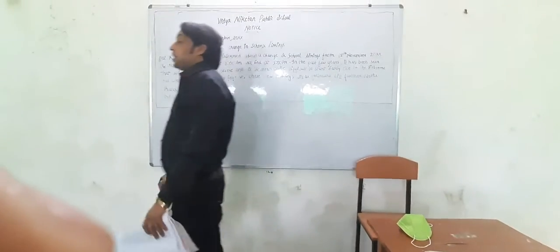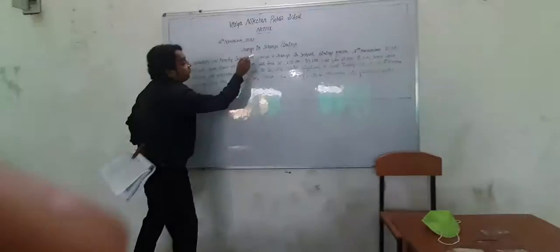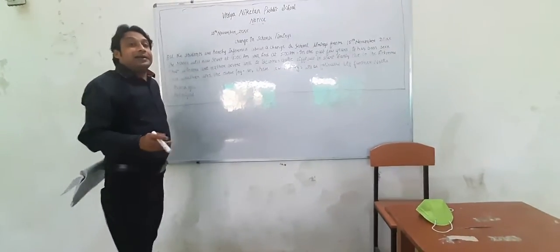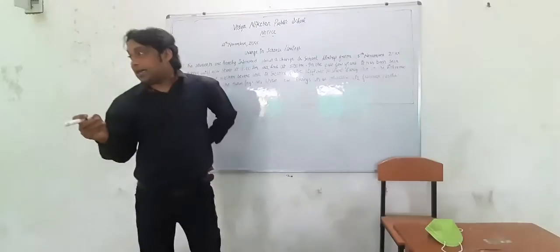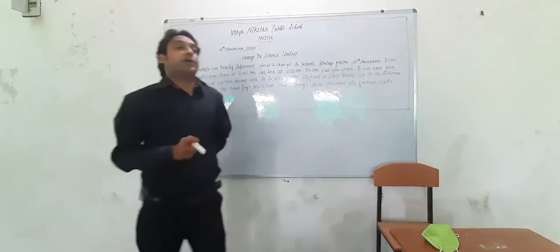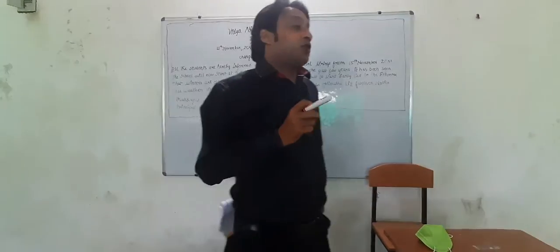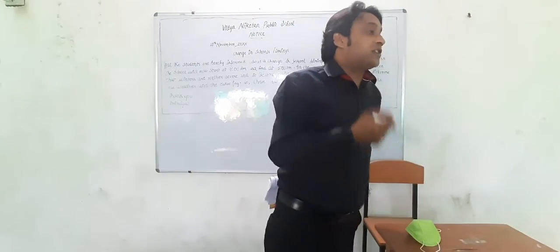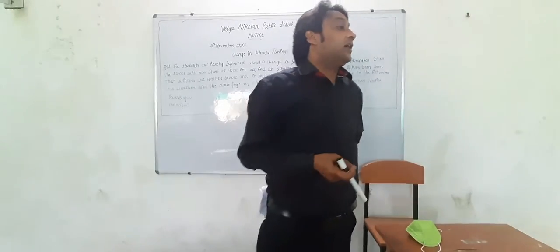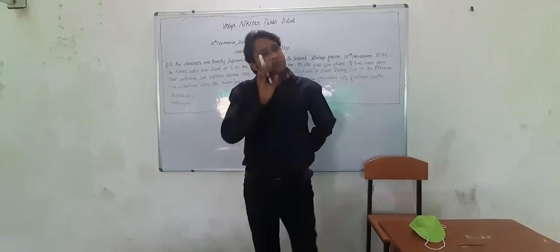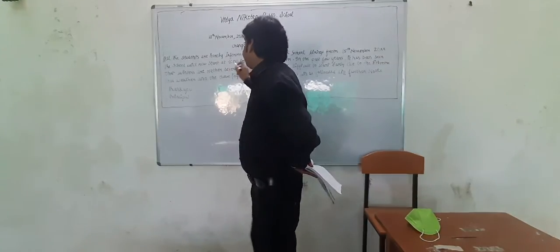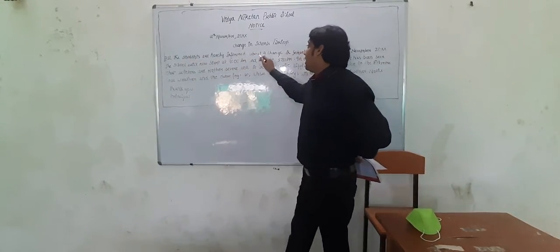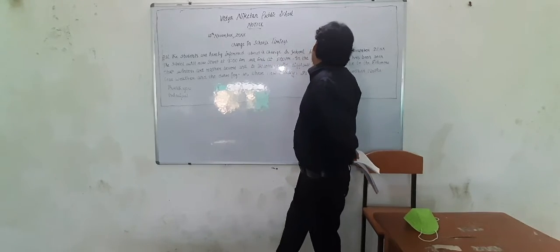Now let us start writing the notice body. I have told you three or four types of opening lines. For example: 'It is notified to all the students,' 'There is information for all the students,' 'All the students of our school are hereby informed,' or 'It is informed to all the students.' Any one of these lines can be used.